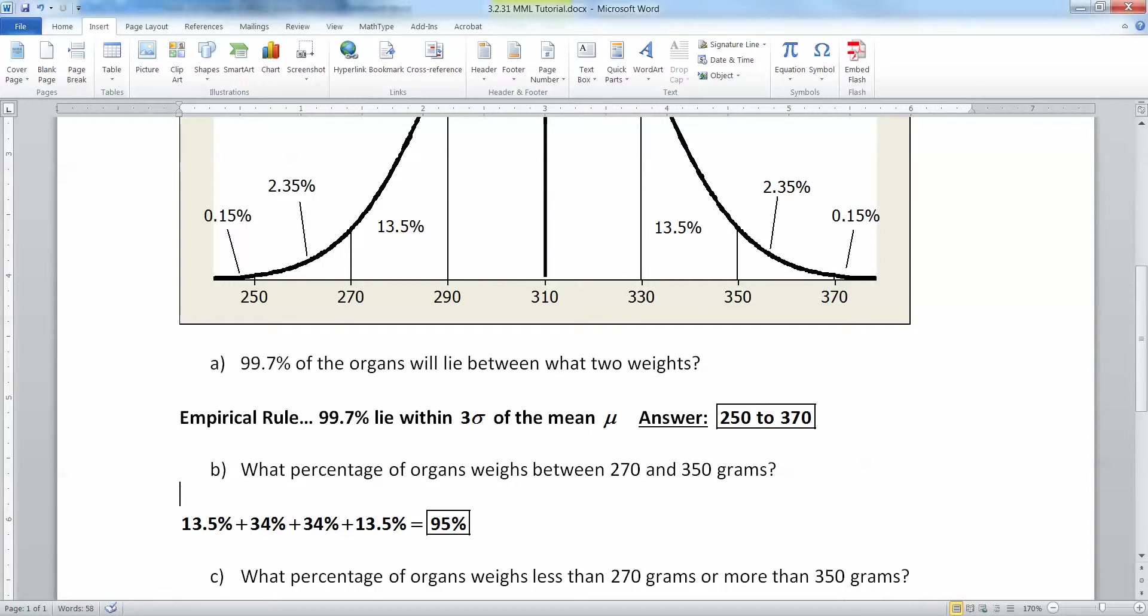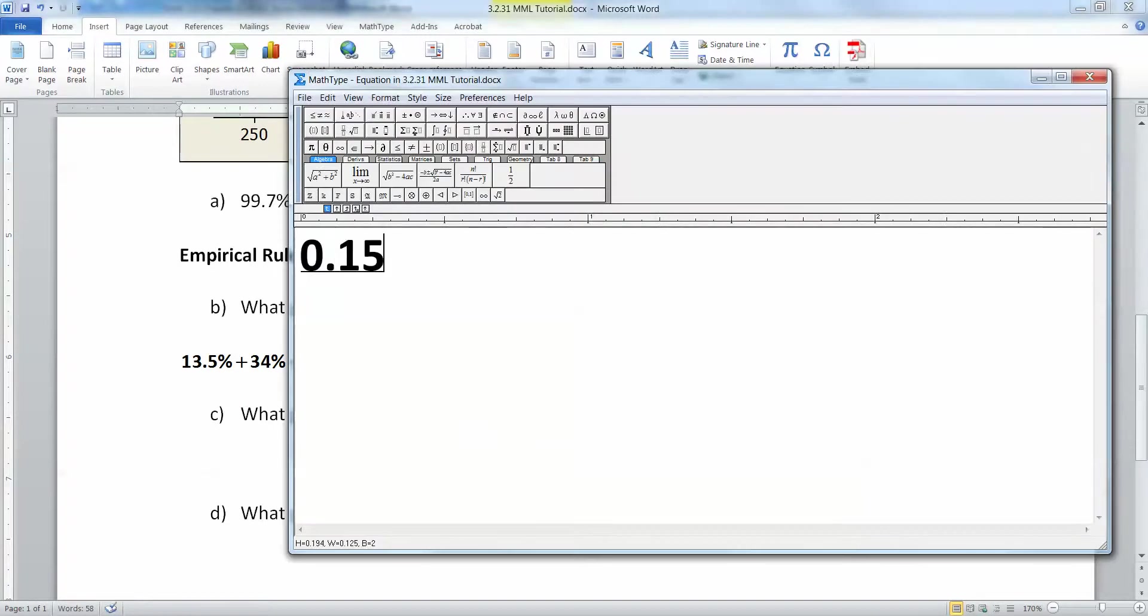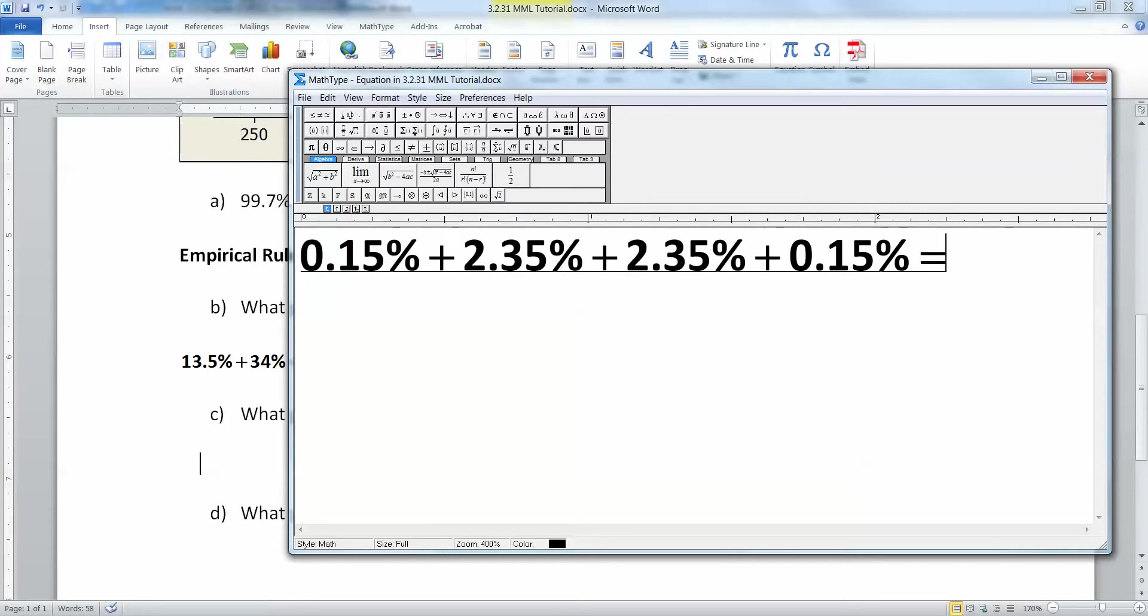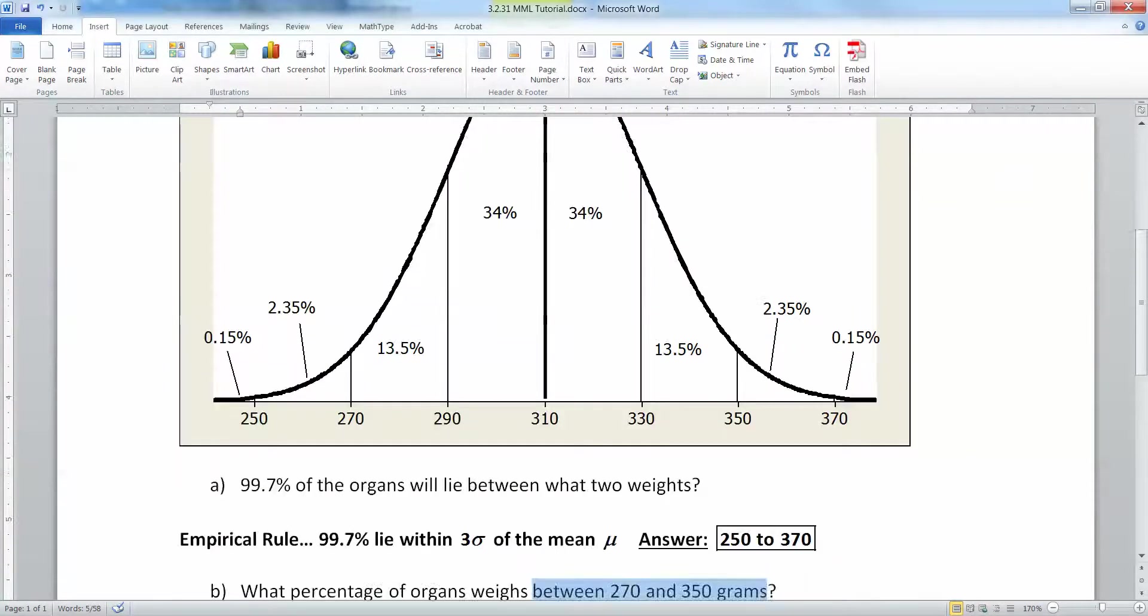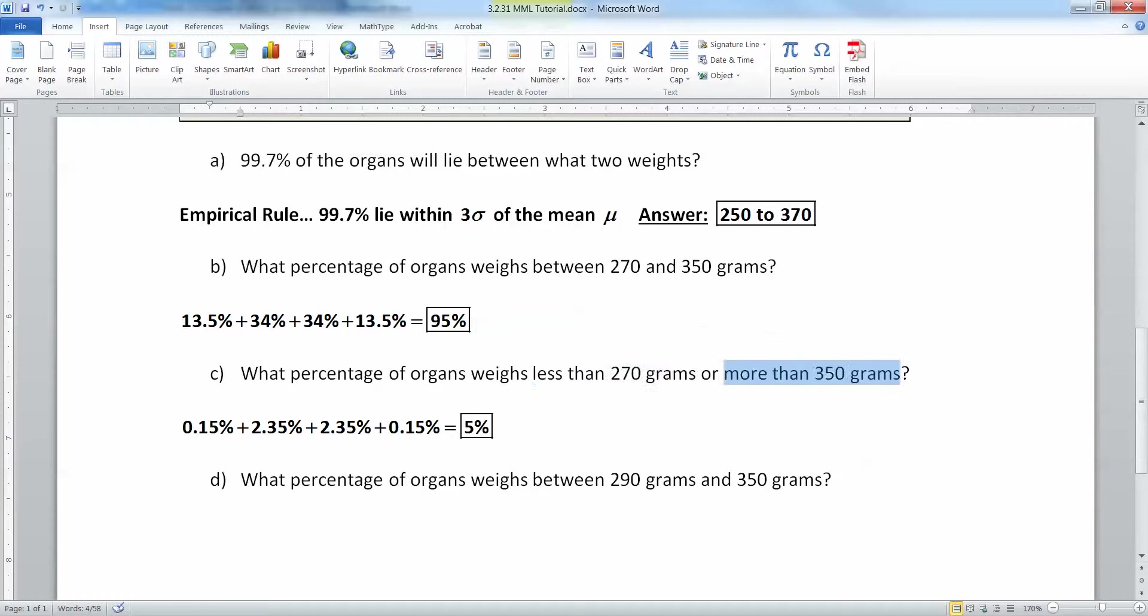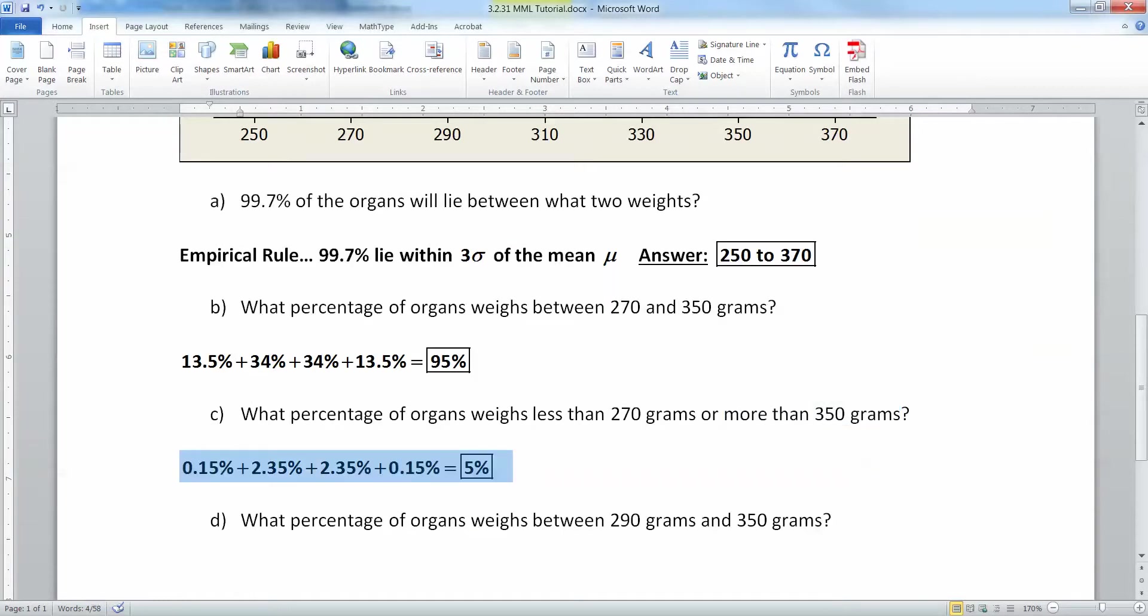Now what percentage of organs weigh less than 270? That's these two numbers over here. So 270 or less is to the left, and more than 350 is this section over here on the right. So we want 0.15% plus 2.35%, that's the left-hand side, then the right-hand side. Altogether, that would make 5%, because you have 2.5% on the left and 2.5% on the right. Another way to see it is that this is talking about the exact opposite of the previous one. This is between 270 and 350, so the sections in between. The next one's talking about being in the left-hand tail, less than 270, or the right-hand tail, more than 350. The whole curve has to make 100%, so if the middle section's 95%, then the two tails together have to make 5%.